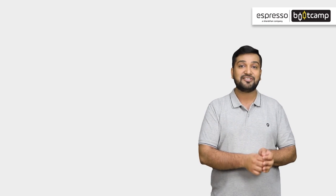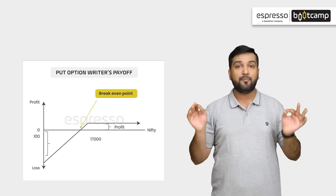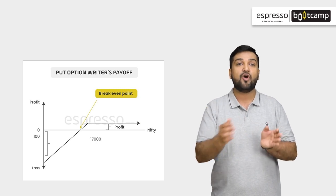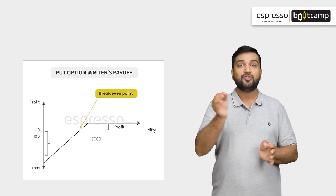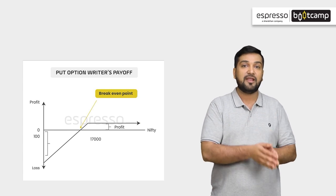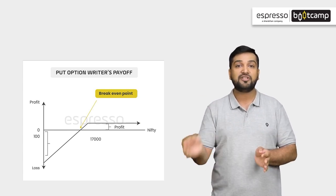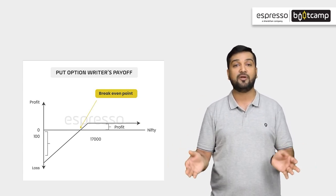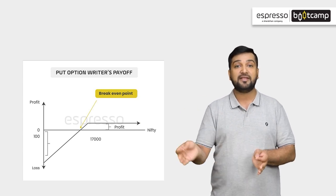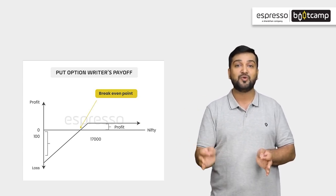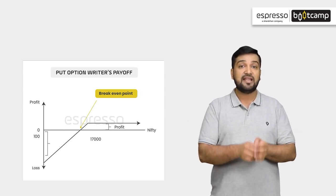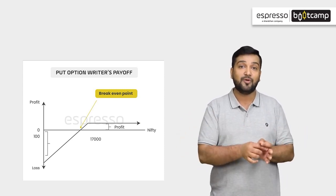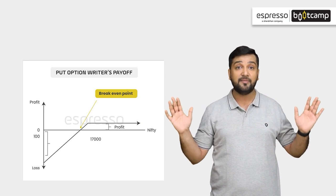Now, let's understand put option writer's pay off diagram. Selling put options works exactly opposite to buying put options. Meaning, joh bhi put buyer ka profit ya loss ho ga, wahi ek put seller ka loss ya profit ho ga. The put option writer's pay off diagram clearly shows the profit and loss zones of a trade. Option seller ka profit hameisha limited hota hai, aur loss unlimited.